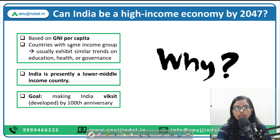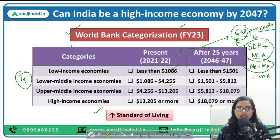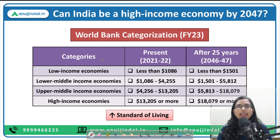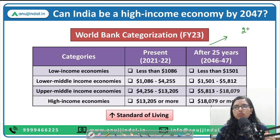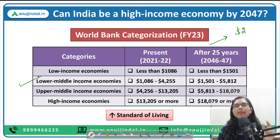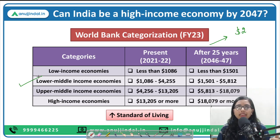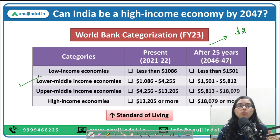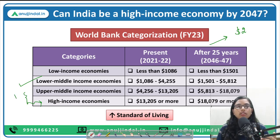If we look at where India currently lies, India's GNI per capita is around $2,000, and therefore we lie within the lower middle income economy. Through this analysis, we want to see what growth rate India needs to achieve in order to reach the high income economy category. We need to surpass two thresholds — jumping from lower middle to upper middle, and then to high income.